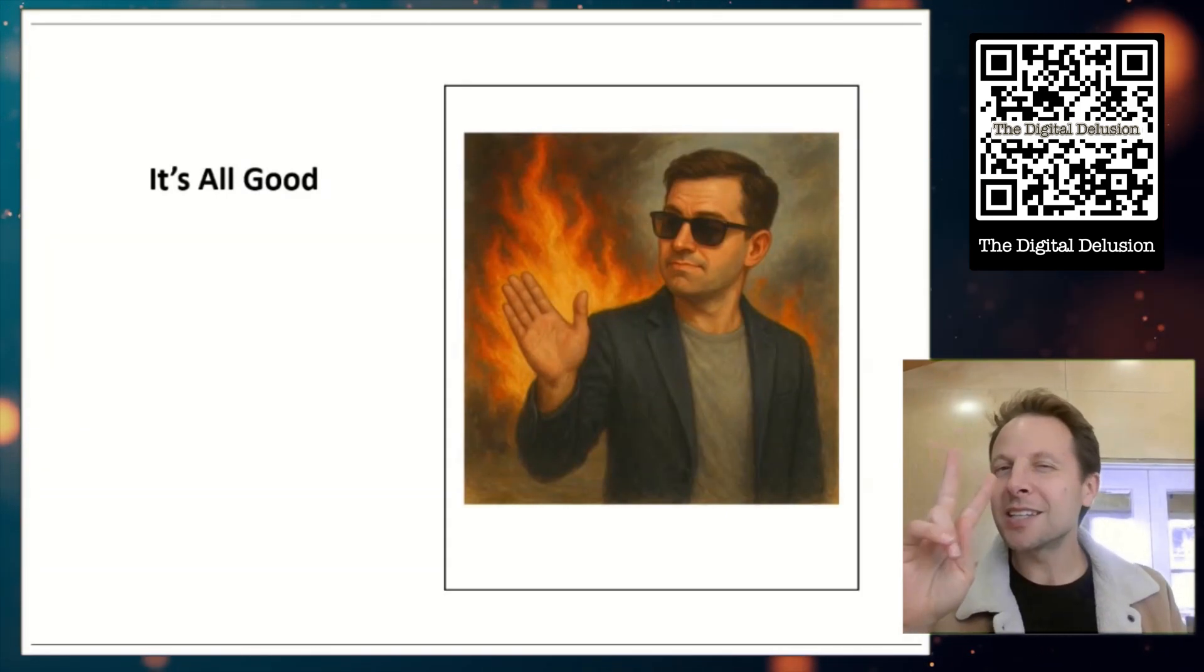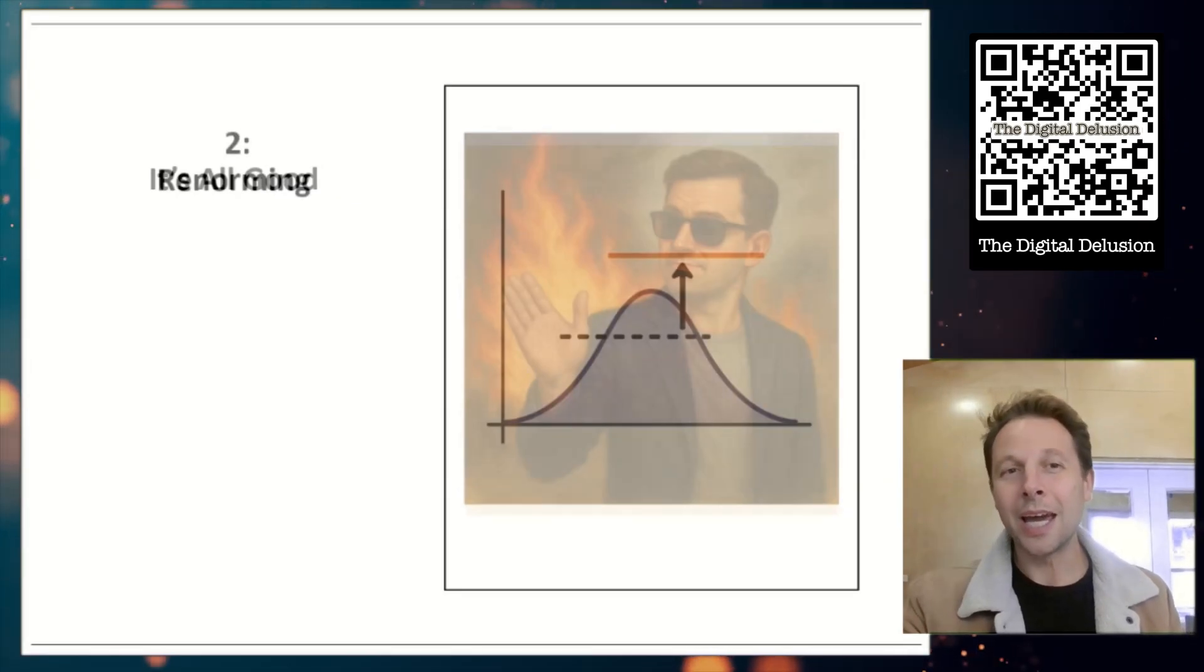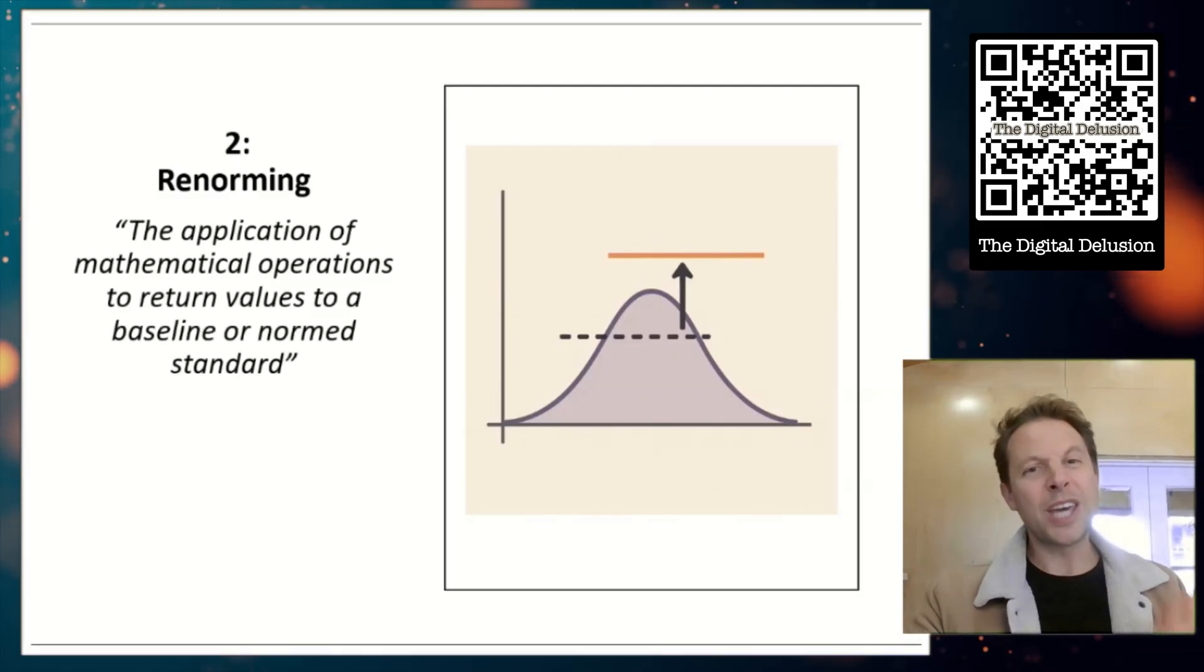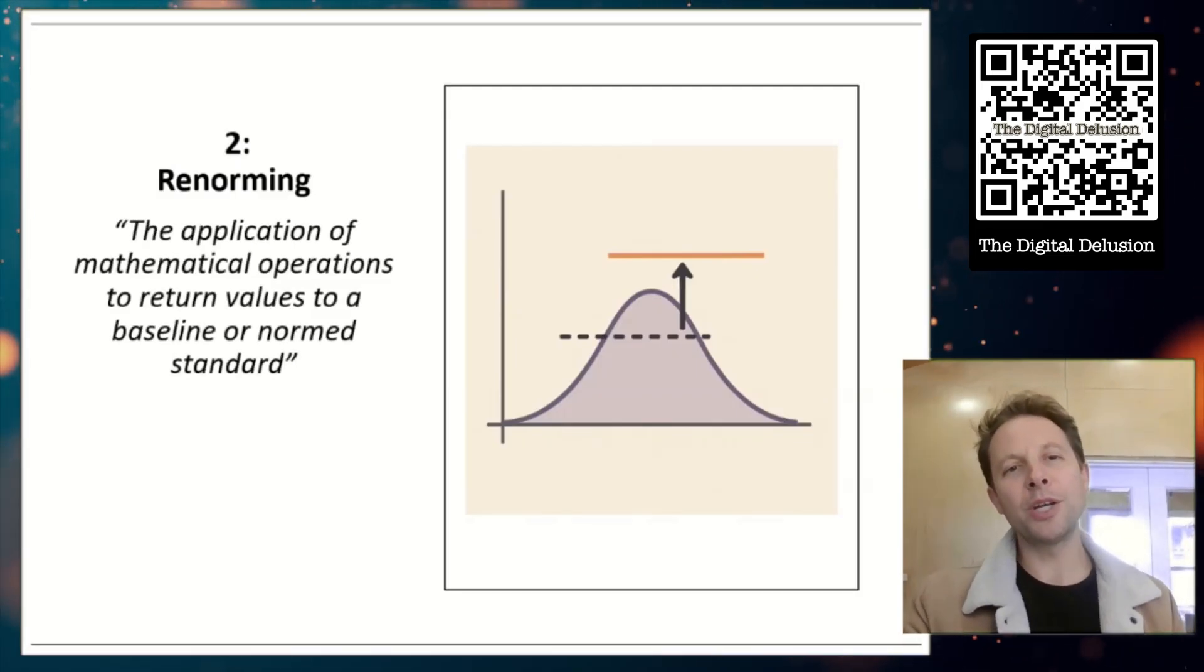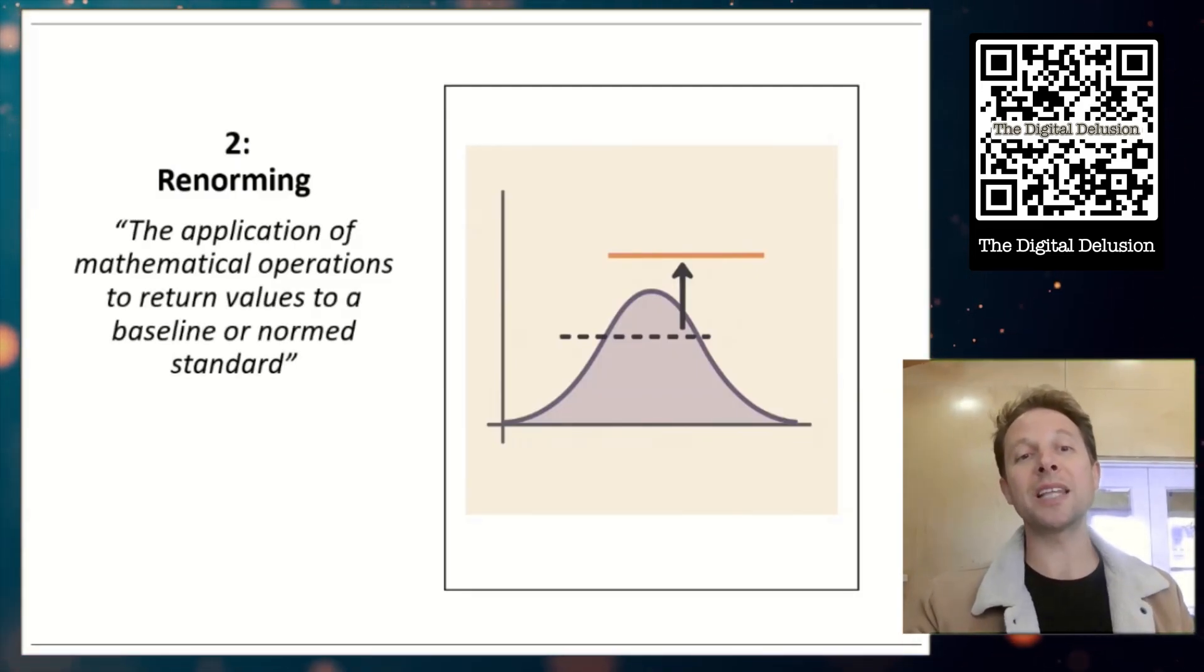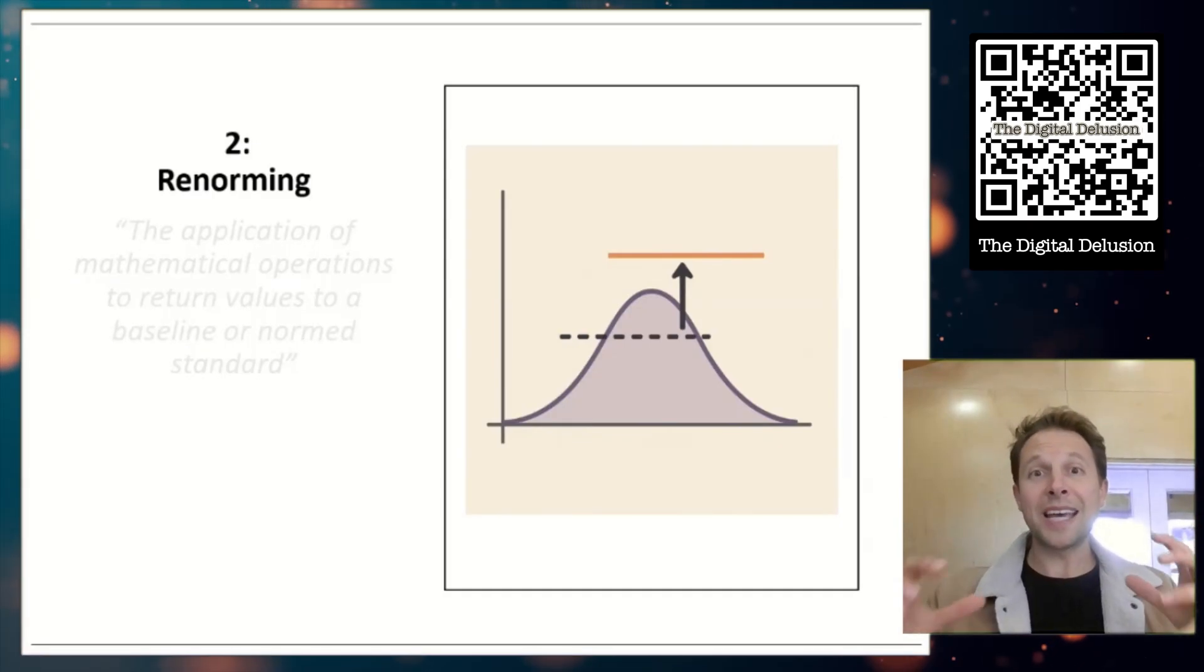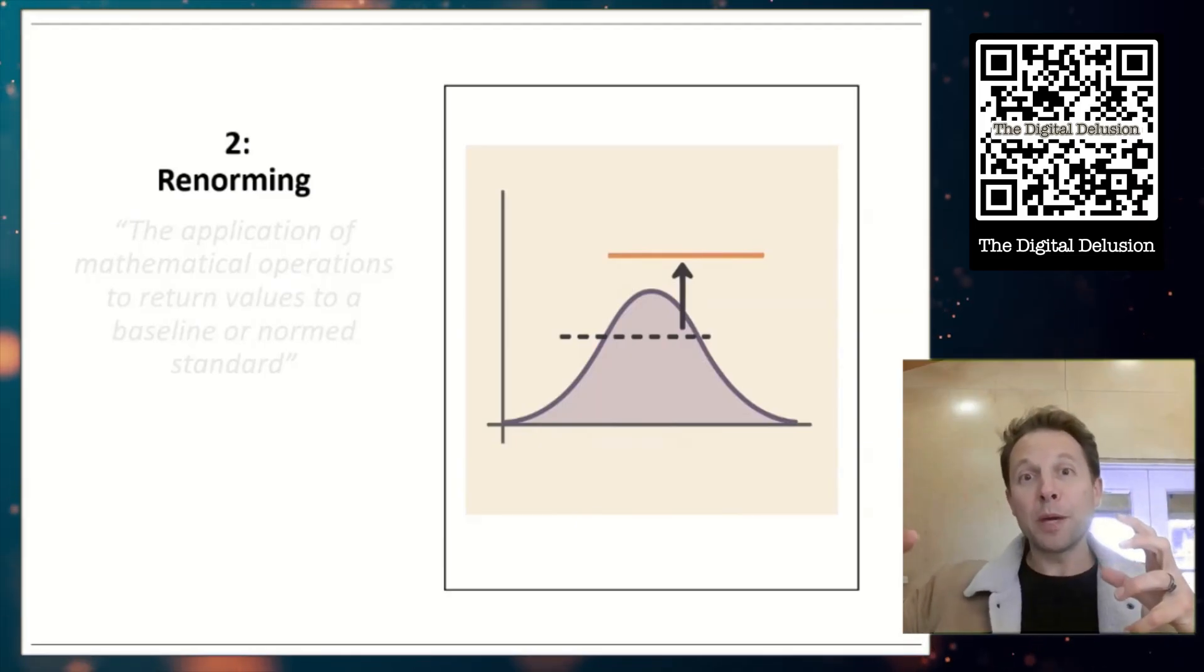That's going to bring us to the second concept we need to learn about today. It's called re-norming. The official definition for re-norming says this: the application of mathematical operations to return values to a baseline or norm standard. Now, that's a lot of words. Let's see if we can't make that a little bit simpler.